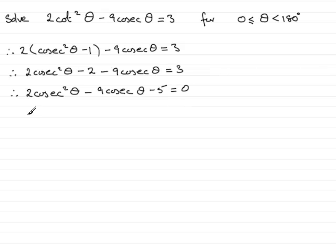All I need to do is factorize this quadratic. We'll have 2 brackets. At the front we'll have 2 cosec theta and a cosec theta. So I've now got my 2 cosec squared theta. Then I'll need a plus 1 and a minus 5. That gives me my minus 5 on the end. I've got minus 10 cosec theta plus another cosec theta, so that's minus 9 cosec theta.